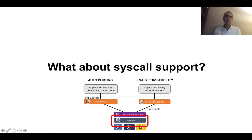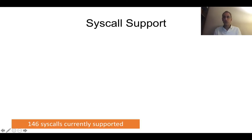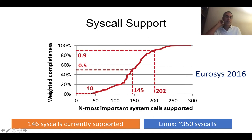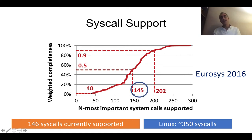It all boils down to syscall support. Regarding syscall support, so far we support about 146 syscalls. To put this in context, there was a paper back in 2016 that did an analysis of how many syscalls are actually needed to run useful applications. Linux has in the order of 350 syscalls, which is quite a bit. But as it turns out, you don't need all of these to run applications. If you have in the range of 145 syscalls, as is the case with Unicraft right now, you could run in the order of 50% of applications. Of course, it matters which of the syscalls you actually support, not just any 145.